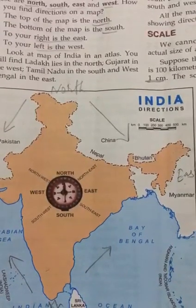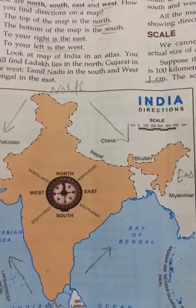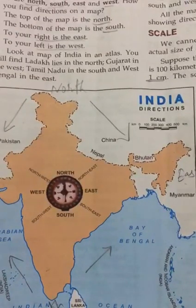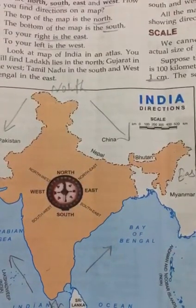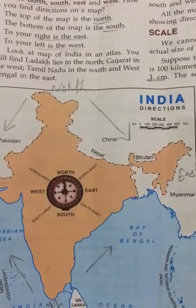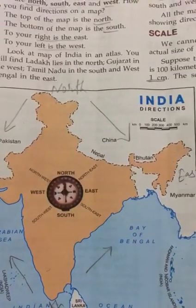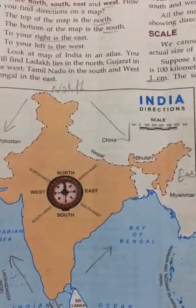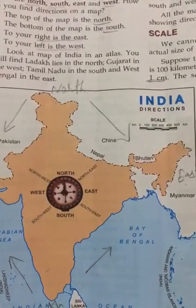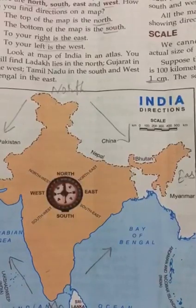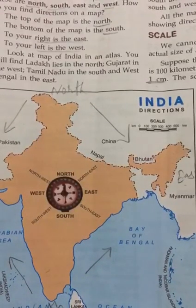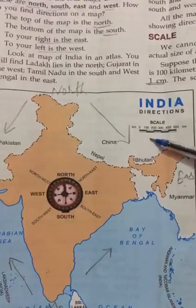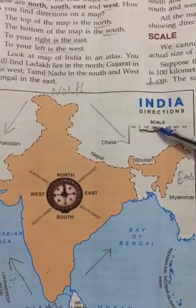Hello dear students of Sektor International School. In the last video we discussed about a comparative study of map and globe. Today we will continue that chapter for fifth standard, and today we will discuss about the directions. Firstly, open your textbook page number 12. So let's start — look, this is a map and here I will explain about the directions.